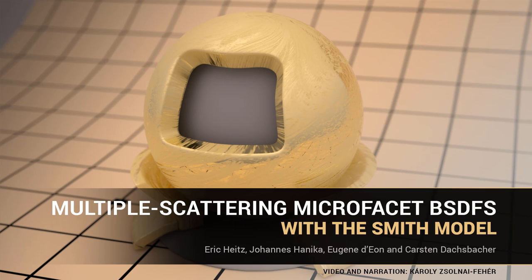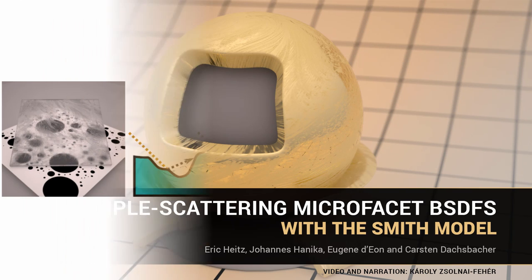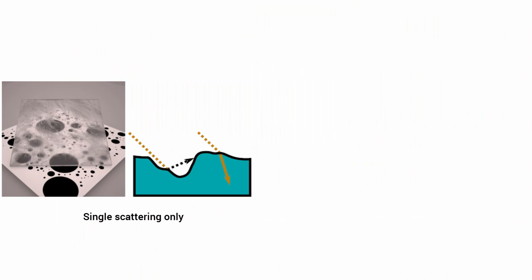In this paper, we address an important open problem in material modeling. What happens when light scatters multiple times on rough material surfaces?